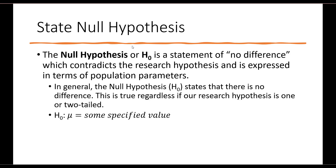Whenever we have a research hypothesis, we also need a null hypothesis — the opposite of our research hypothesis. The null hypothesis, or H sub zero, is a statement of no difference, which contradicts the research hypothesis and is expressed in terms of population parameters. In general, the null hypothesis states that there is no difference, regardless of whether our research hypothesis is one or two-tailed. In almost every case, our null hypothesis states that our population parameter is equal to our specified value, in contrast to our research hypothesis which states it is different, greater than, or less than.